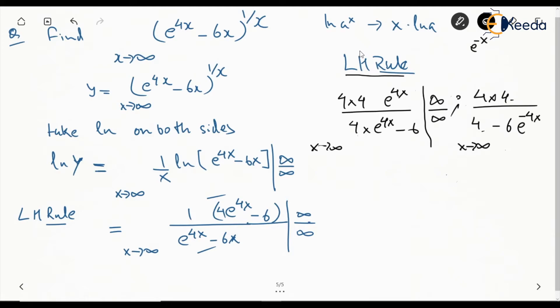We know e to the power minus x for x tends to infinity will be 0. So this becomes 4 times 4 divided by 4 minus 0, which is directly 4.